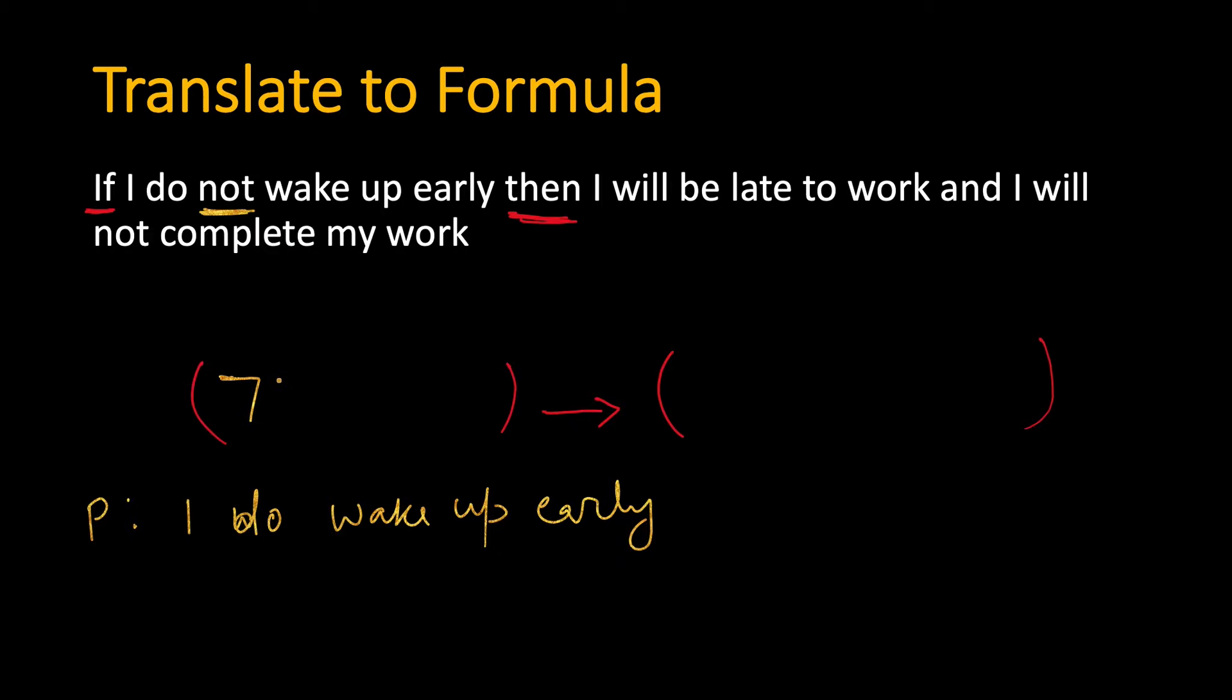P is here and the negation of this will be I do not wake up early. So this part is complete. Then the second sentence is I will be late to work. Let Q be I will be late to work. Write Q here and then we have and.